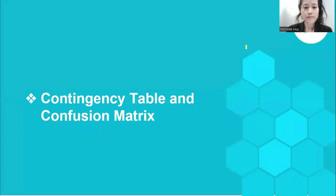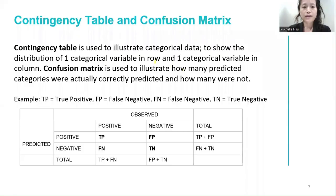For every new observation being classified and labeled in the cross-validation process, we will observe four possible scenarios which can then be explained using a contingency table and confusion matrix. A contingency table is basically a table showing the distribution of one categorical variable in rows and one categorical variable in columns. The confusion matrix defines the performance of a classification algorithm. The rows represent what the model predicts and the columns represent the patient's actual disease status. True positive and true negative are the scenarios when the model correctly identifies the patient's actual disease status.